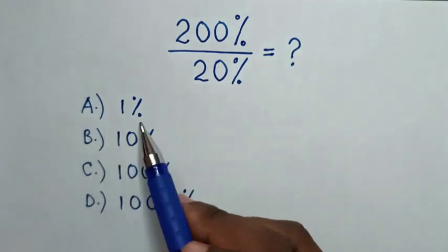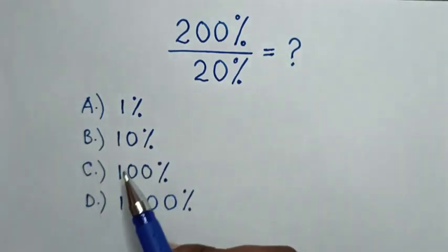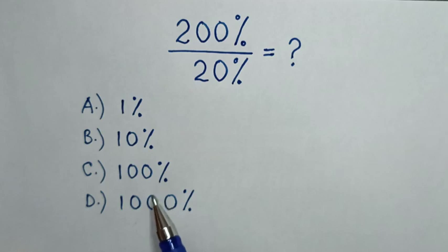Select between the answers: A, 1%; B, 10%; C, 100%; D, 1000%.